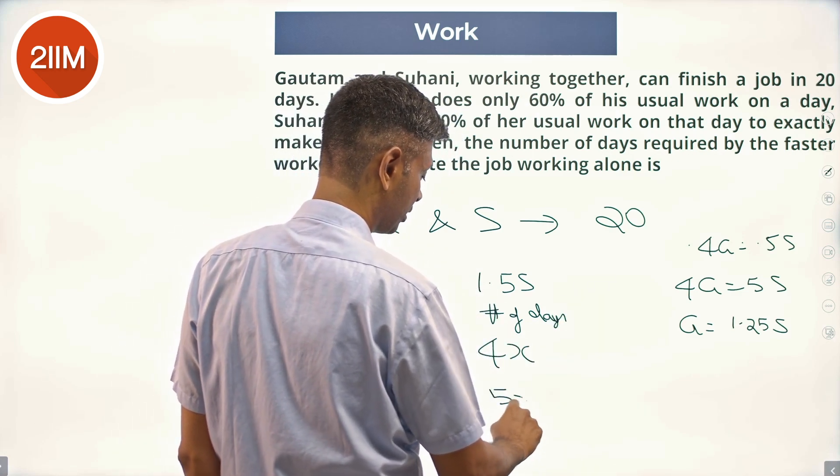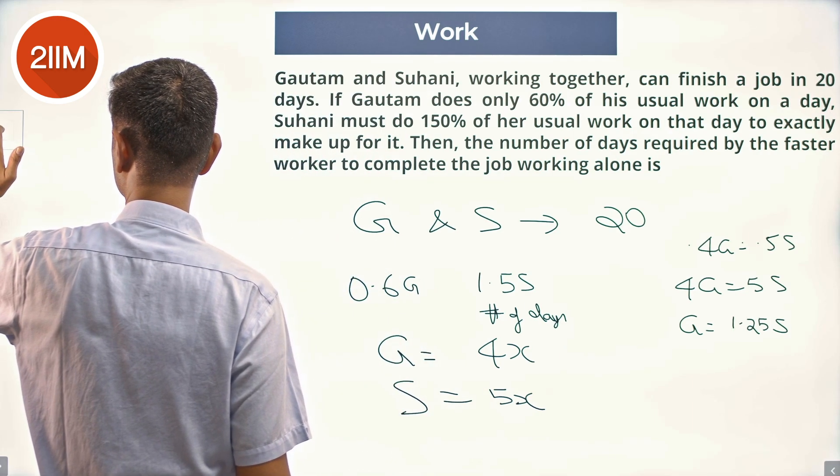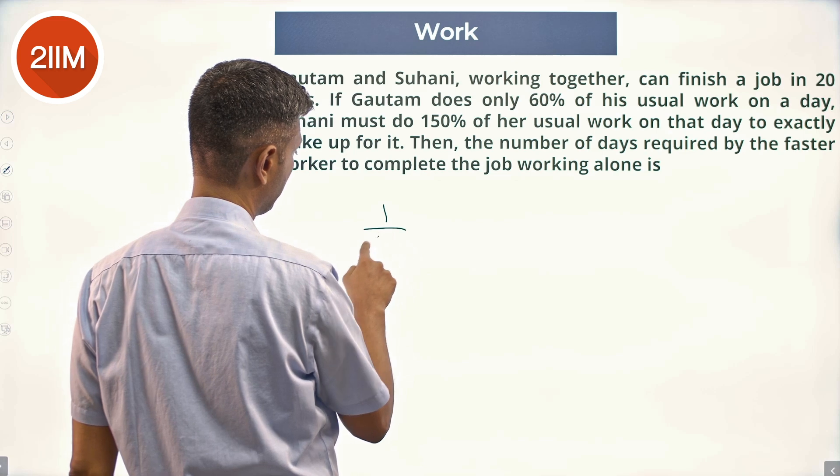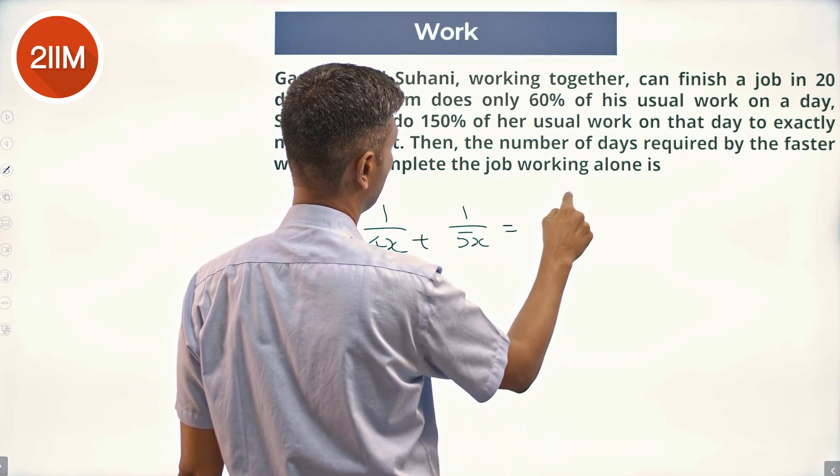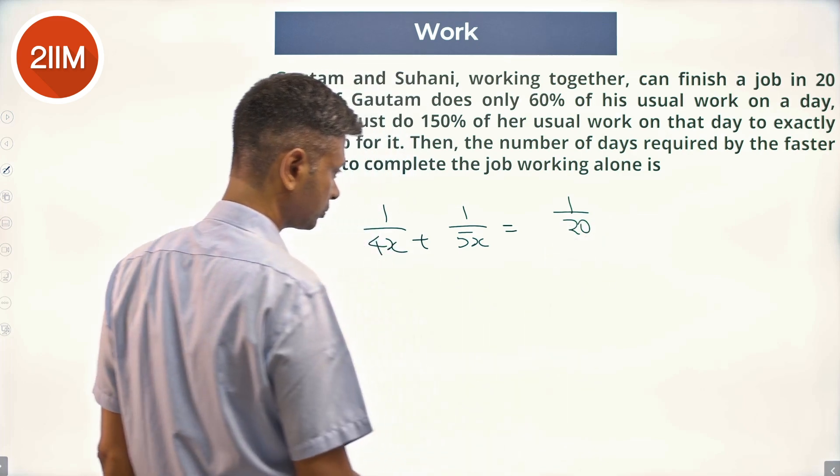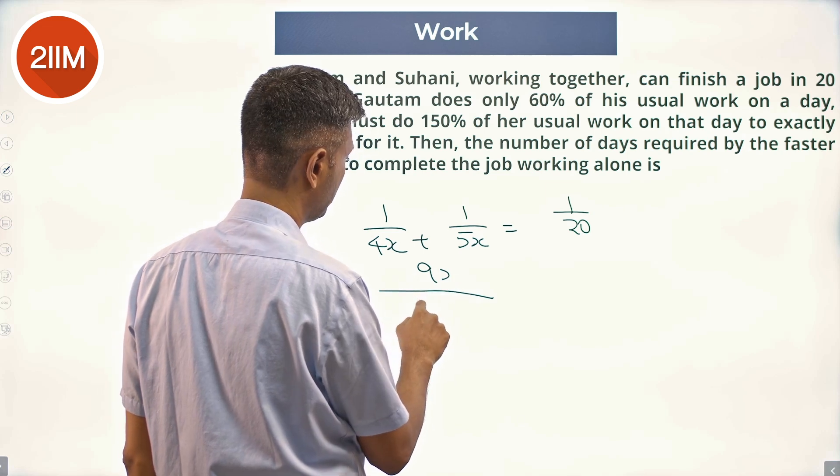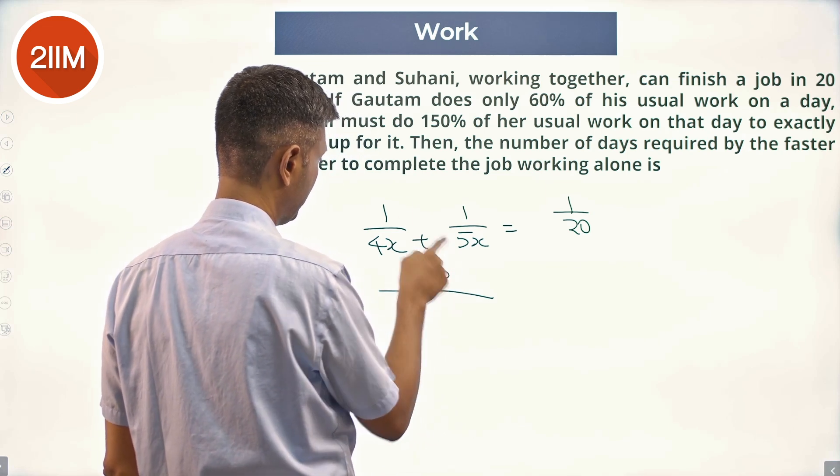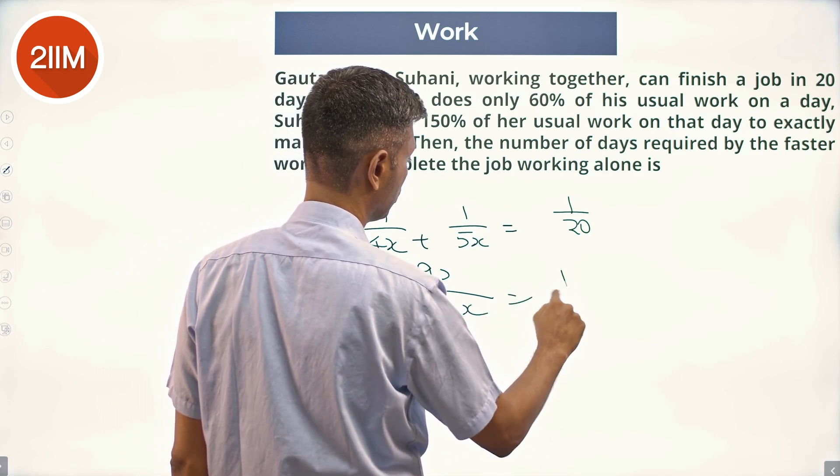would be 5x. Now we know this equation: 1 by 4x plus 1 by 5x equals 1 by 20. 5x plus 4x by 20x, so 9 by 20x equals 1 by